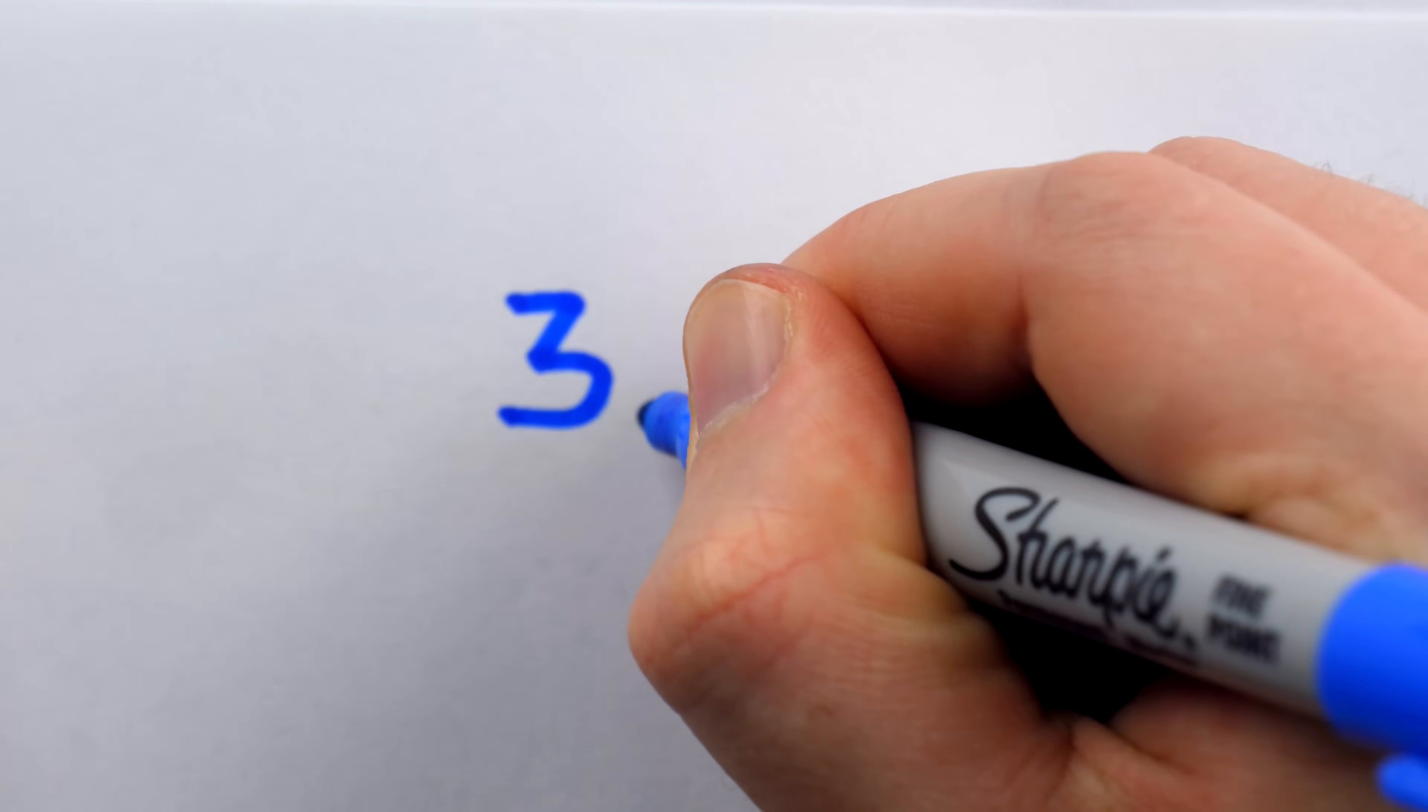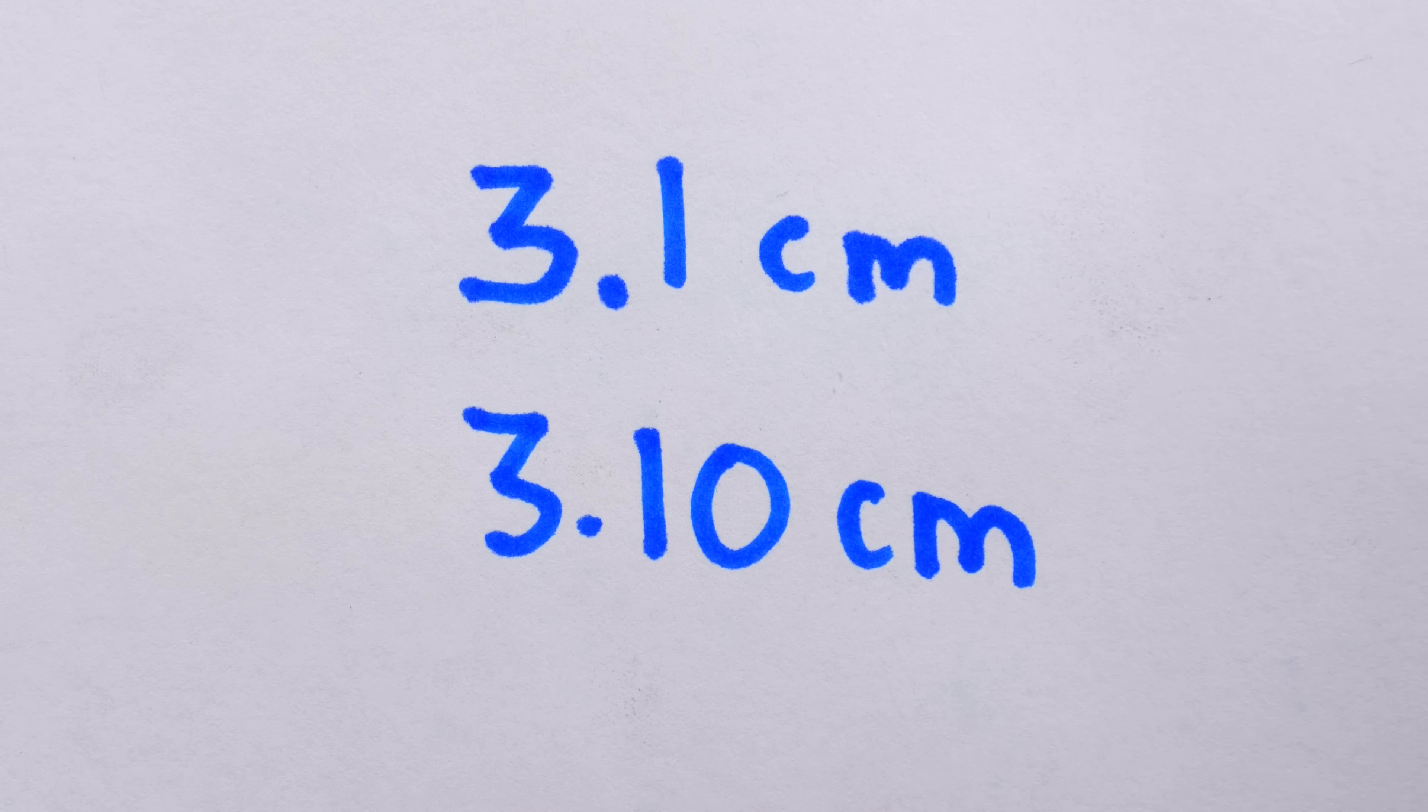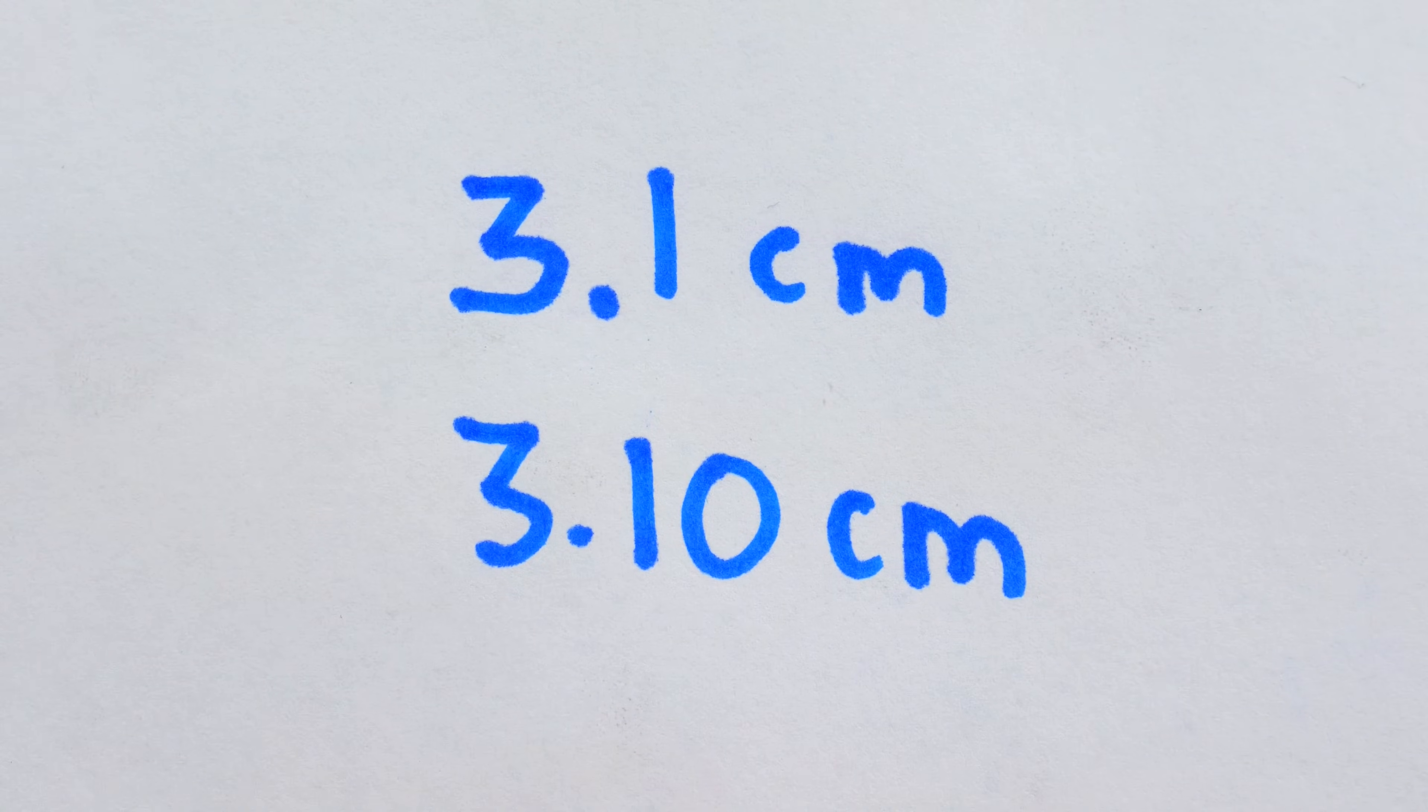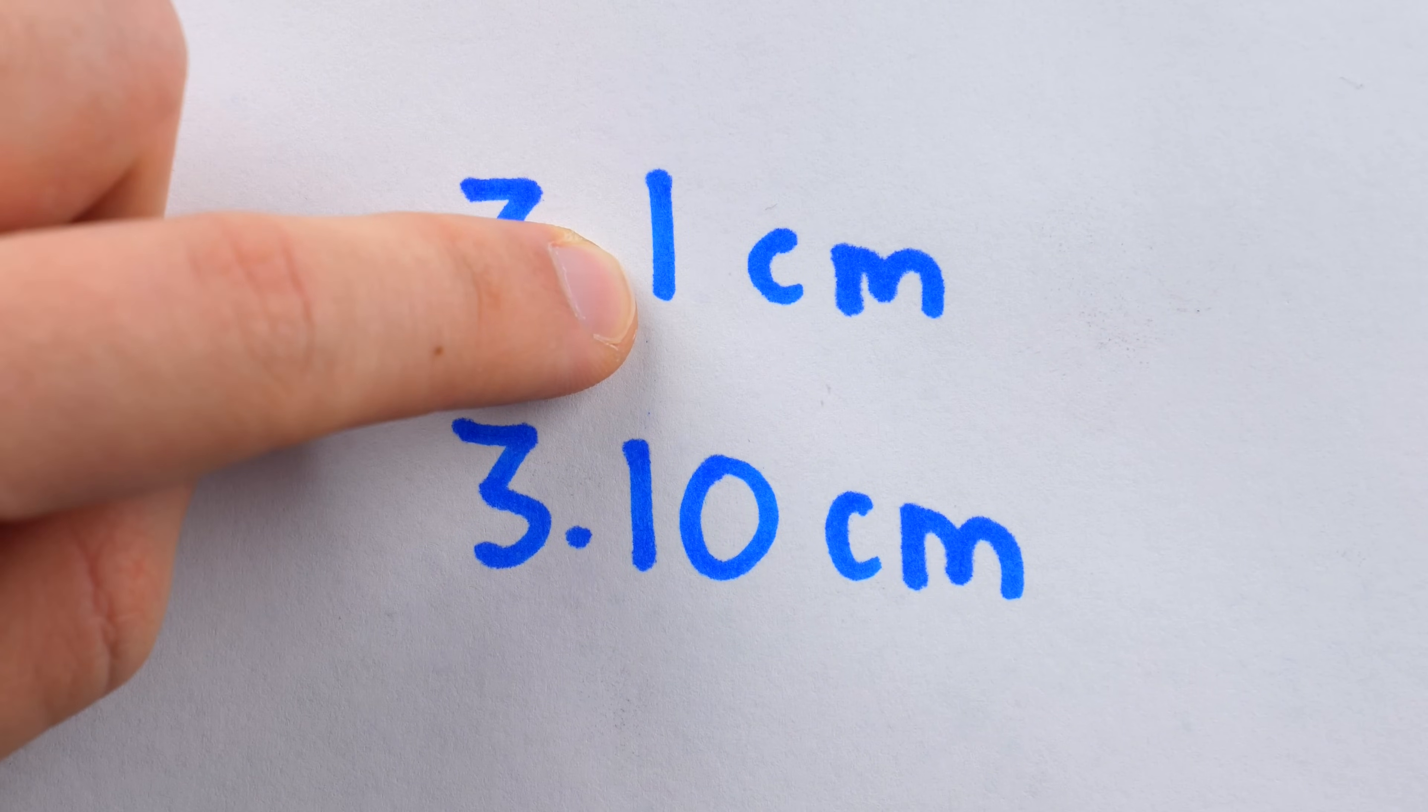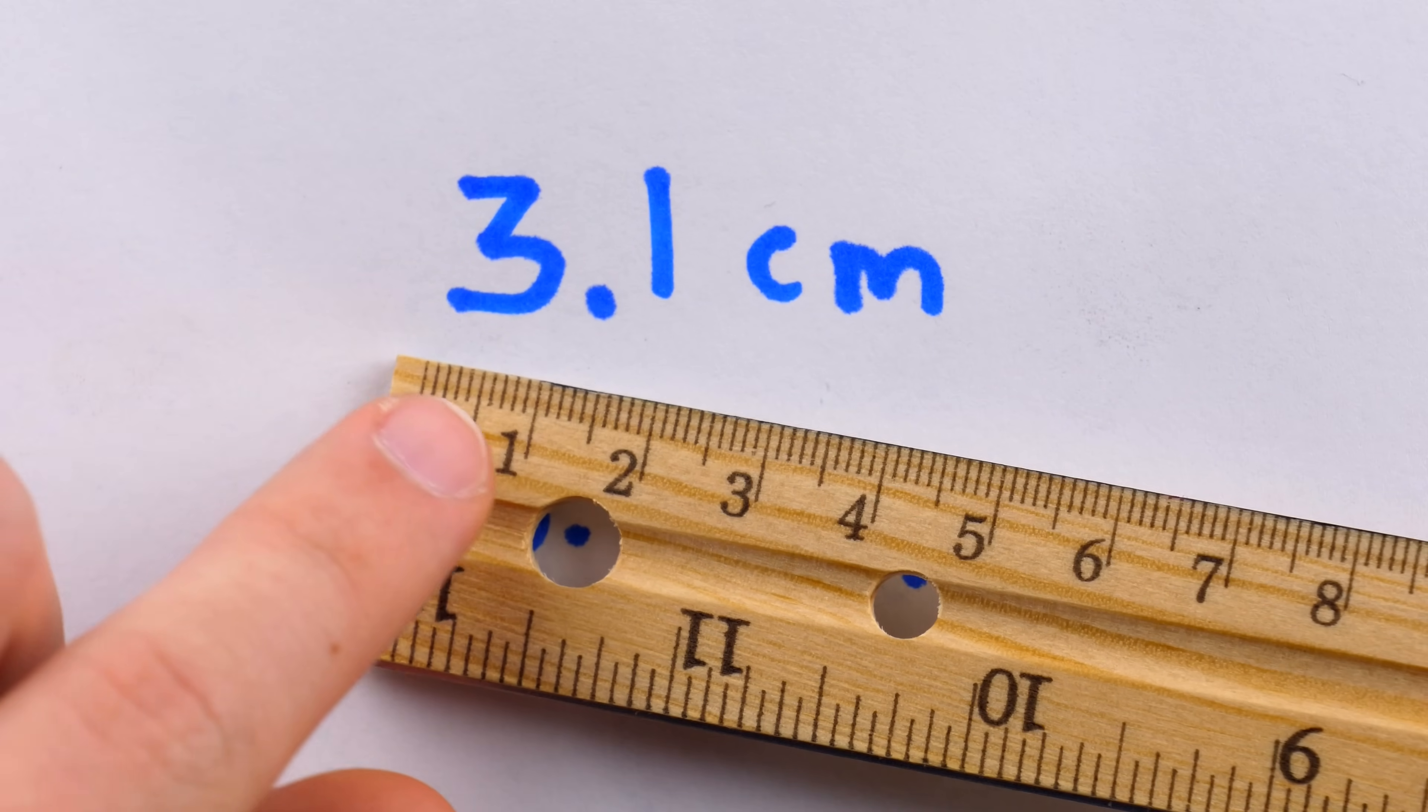If I measured the pin to have a diameter of exactly 3.1 centimeters, is 3.1 different from 3.10? In the context of recording measurements, yes, they are different. When recording measurements, the last digit is assumed to be an estimate. Since with my ruler I can confidently measure up to millimeters, this 0.1 centimeter, which is of course a millimeter, is not an estimate. I'm confident in that part of the measurement. However, I have estimated that there is zero extra length, that it's exactly 3.1 centimeters, and so I'm permitted to put this zero here to communicate that estimate of precision.